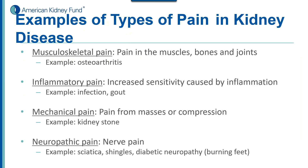There are musculoskeletal pain — usually pain in joints, bones, and back, such as osteoarthritis. There's inflammatory pain caused by inflammation, such as an infection or gout, where white blood cells release substances that cause pain. Mechanical pain comes from compression or a mass — like a tumor in your abdomen or a kidney stone. And then neuropathic pain — sciatica, shingles, diabetic neuropathy — involves actual nerve injury along the nerve fiber cable, with pain signals relayed to your brain.